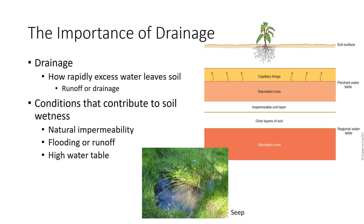First, soils may be wet because they are naturally impermeable, like a compacted clay soil. Second, soil may be inundated by flooding or runoff from higher elevations. The third and most common cause of soil wetness is a high water table, the upper surface of a zone of saturation in the soil.